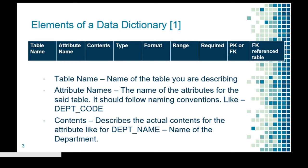Contents describe the actual contents for the attribute. For example, for dept_name, the content describes that it is the name of the department.